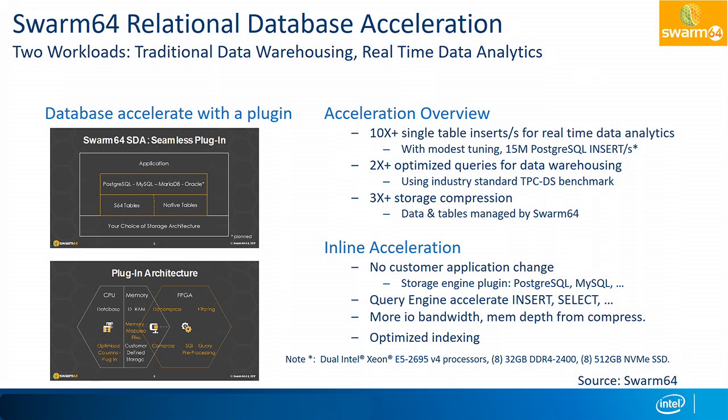On traditional relational database data warehousing types of workloads, you get between 2 to 3X acceleration for benchmarks like TPCDS or TPCH. Because of the compression, you can also save on the storage you need to run the database on. All of this is inline on the data going to storage, even handling some of the SQL commands and filtering of the traffic — a very significant offload, just by plugging in this low-profile PCI Express card.